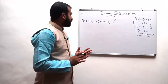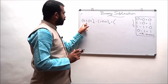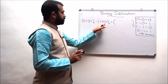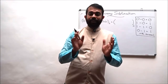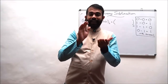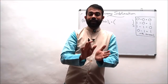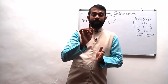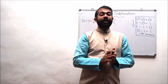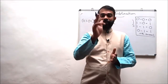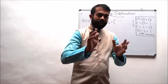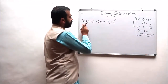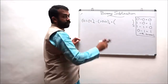Let us consider some examples. Our first example is to subtract 1-1-0-0-1 from 1-1-1-0-1. We have to consider that a lesser number is always subtracted from a greater number — this is an important point for binary subtraction. So here we are subtracting 1-1-0-0-1 from 1-1-1-0-1.